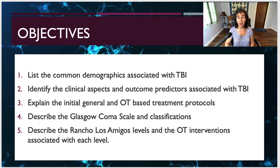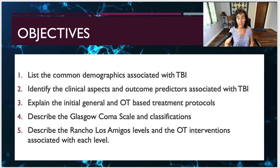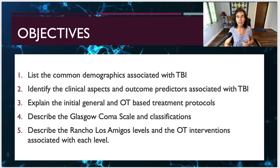The first objective is to list the common demographics associated with traumatic brain injury, or TBI. The second objective is to identify the clinical aspects and outcome predictors associated with TBI. Third, explain the initial general and OT-based treatment protocols — what do we do when we work with somebody with TBI? Then we're going to go into a couple different classification systems: the Glasgow Coma Scale, or GCS, and the Rancho Los Amigos levels, along with the OT interventions and protocols associated with each level, especially those in the sweet spot where OT works with those with TBI.